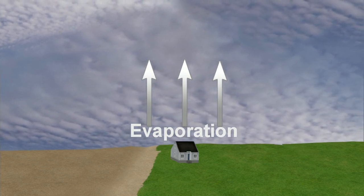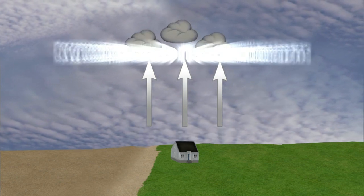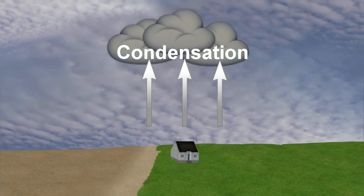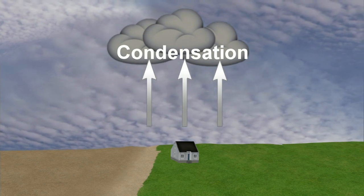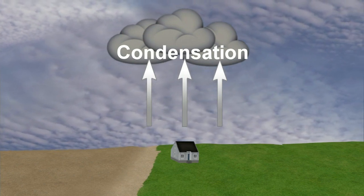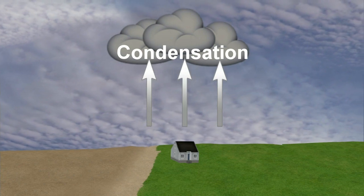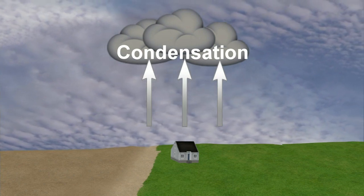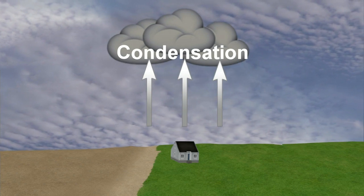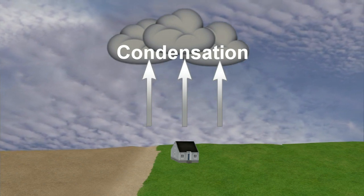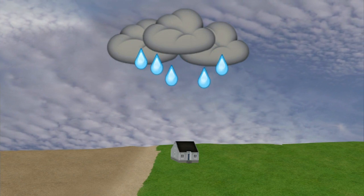Since temperature usually decreases with height, eventually the air and moisture cools and condenses to form clouds. The clouds become denser as more moisture rises, and the water droplets grow in size through a process called collision coalescence — when water particles bump into each other within the cloud. Once these water particles become too heavy for the cloud to hold, gravity then plays a role and the water droplets return to the ground in the form of rain.